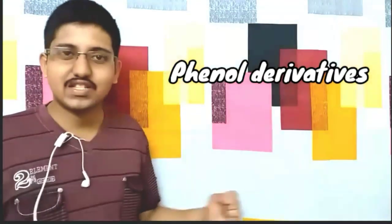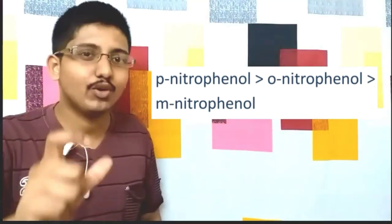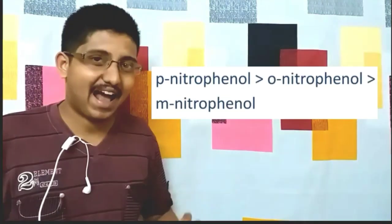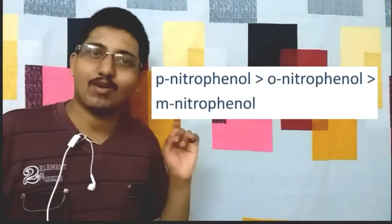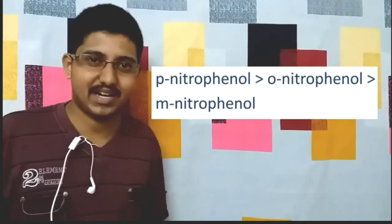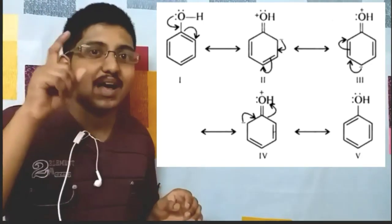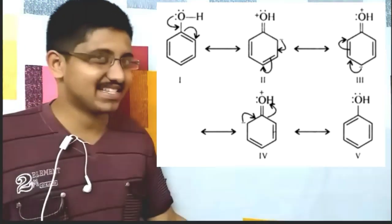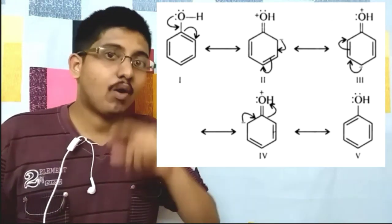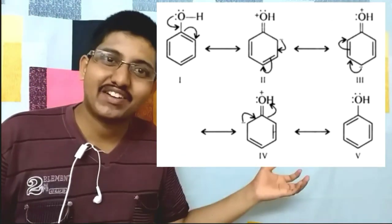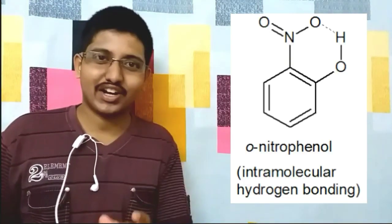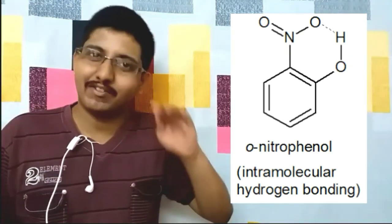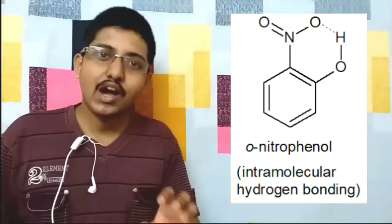When a nitro group is attached to phenol, the order is: paranitrophenol > orthonitrophenol > metanitrophenol. The +R (resonance) effect does not operate or is less effective at the meta position, so metanitrophenol is least acidic. Orthonitrophenol is less acidic than paranitrophenol due to steric hindrance and intramolecular hydrogen bonding at the ortho position.